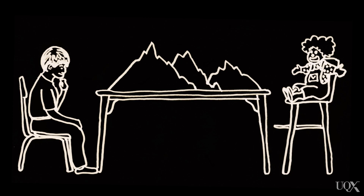In this experiment, the child sits on one side of the desk and a puppet or an experimenter on the other side. There are three big mountains in the middle that basically obstruct the view of the child from that of the puppet. You can place something like a pink house on one end and ask the child: does the puppet know what colour the house is?